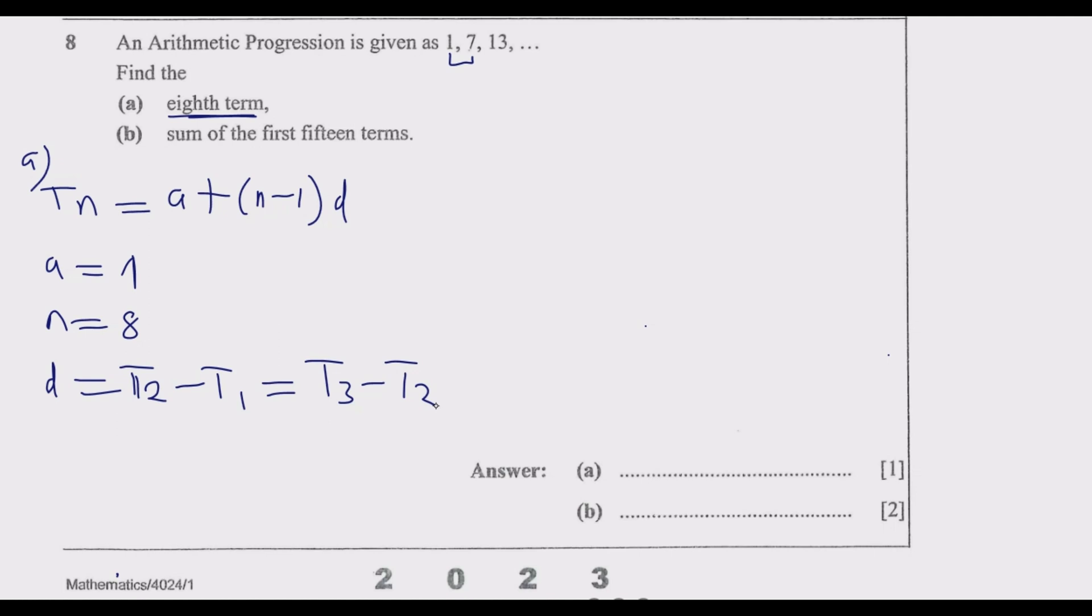If it's not constant, then it's not an arithmetic progression. It would be a geometric progression, which is either increasing or reducing by a given ratio. In this case, the second term is 7, so 7 minus 1 equals 6. The third term is 13 minus 7, which is again 6. So indeed, 6 is the common difference.